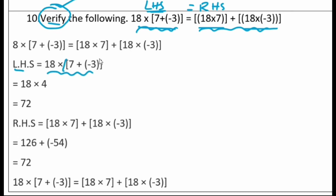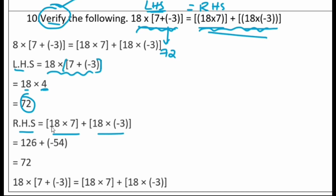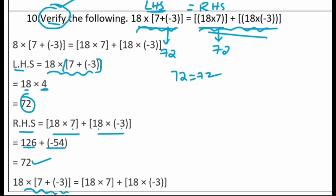Now for RHS: 18 into 7 plus 18 into minus 3. We know 18 sevens are 126, and 18 into minus 3 is minus 54. So 126 minus 54 is 72. LHS is 72 and RHS is 72, so LHS equals RHS. Therefore, we have verified that 18 into (7 plus minus 3) equals 18 into 7 plus 18 into minus 3.